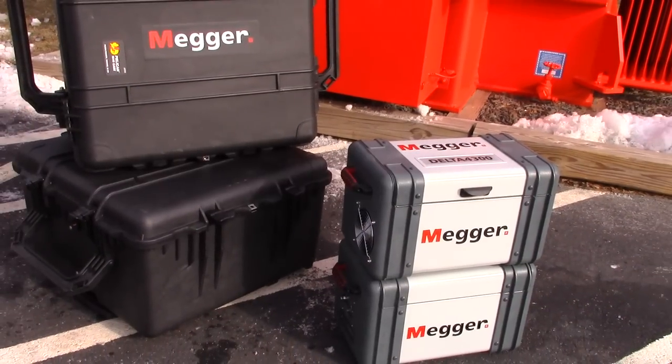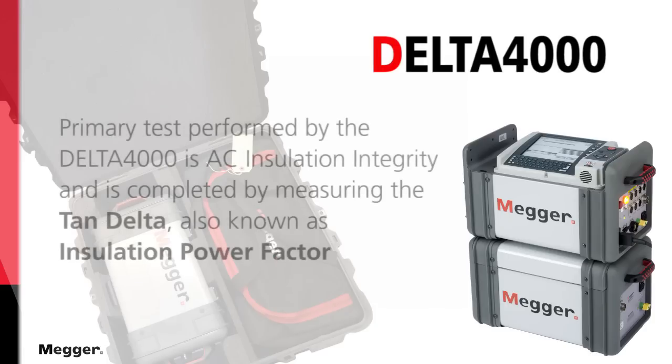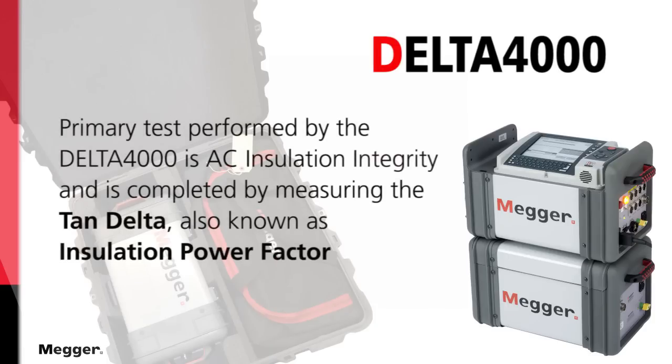The primary test performed by the Delta 4000 is AC insulation integrity and is completed by measuring the tan delta, also known as insulation power factor.